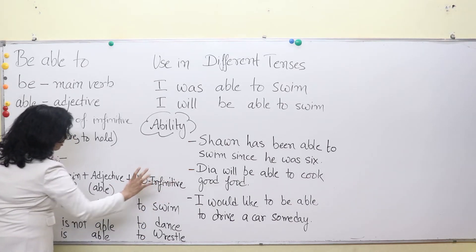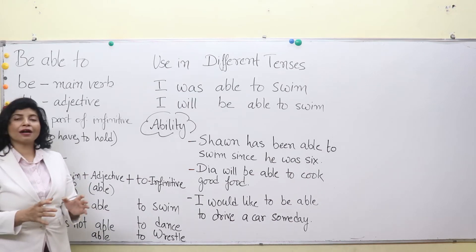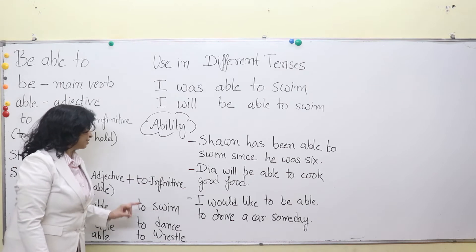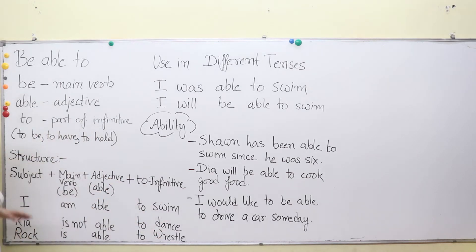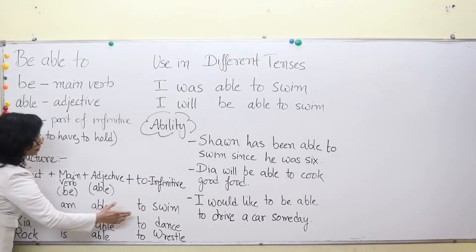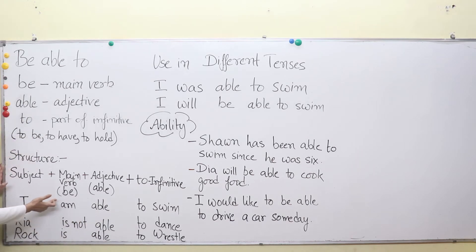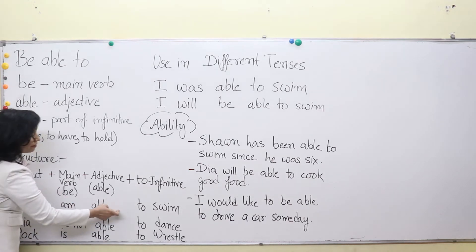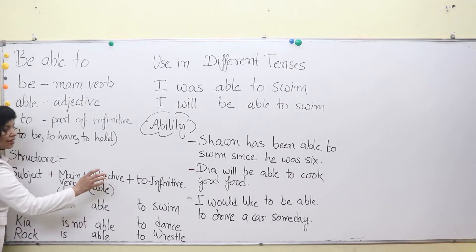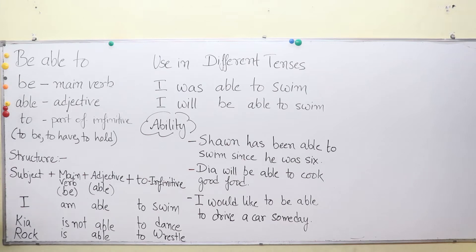Infinitives without 'to' are known as bare infinitives. Here we use a to-infinitive: to swim, to dance, to wrestle, etc. So we can see: 'I am able to swim.' Here 'be' is the main verb, 'able' is the adjective, and 'to swim' is the infinitive. Another example: 'Kia is not able to dance' — that means she does not have the ability to dance, she can't dance well.